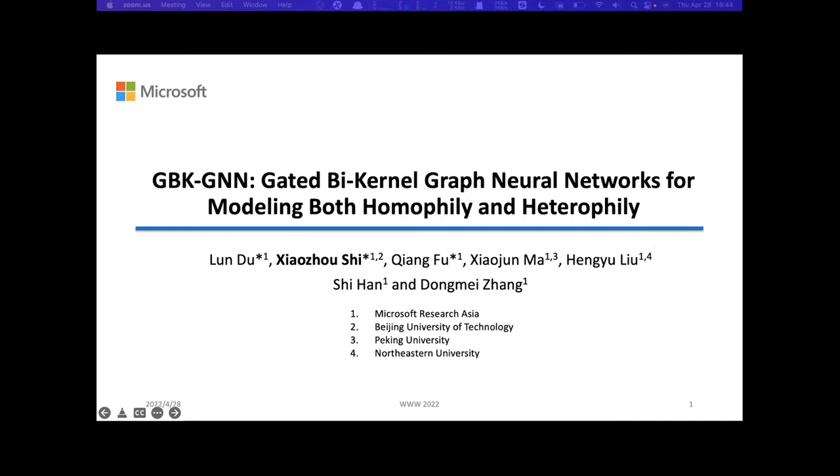GBK-GNN: Gated Bi-Kernel Graph Neural Networks for modeling both homophily and heterophily.